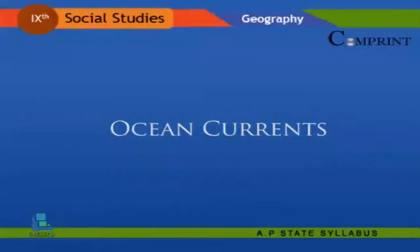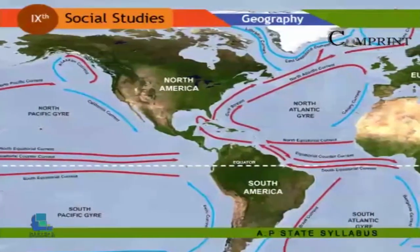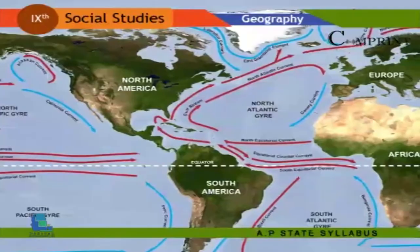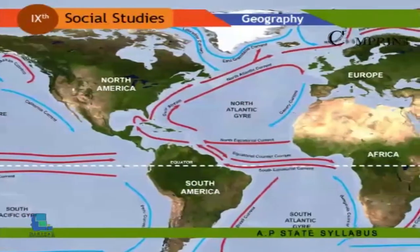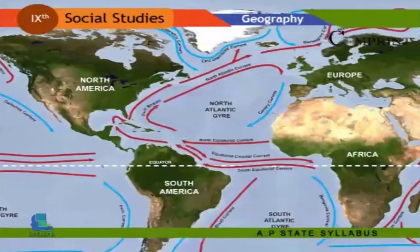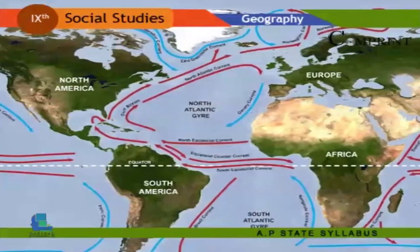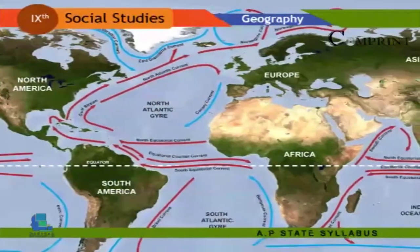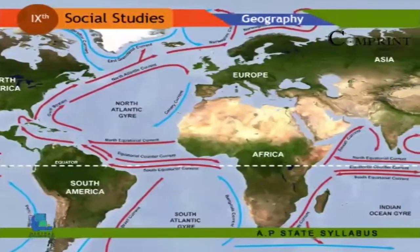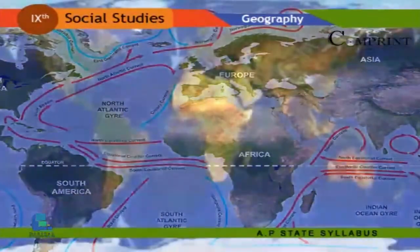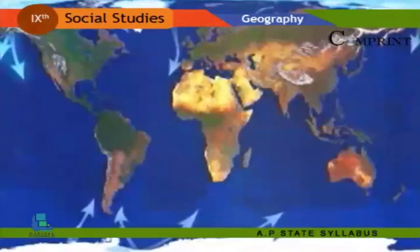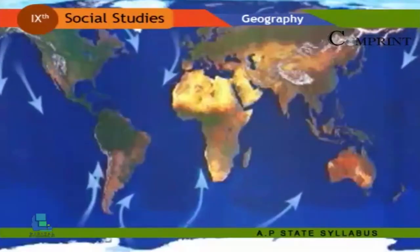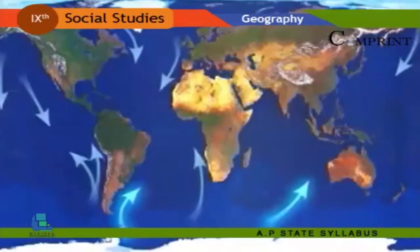Ocean currents: An ocean current is the general movement of a mass of water in a fairly defined direction over a great distance. Ocean currents are sometimes called ocean rivers. Ocean currents may be classified based on temperature as cold currents and warm currents. Generally, warm currents flow towards the poles and cold currents flow towards the equator.